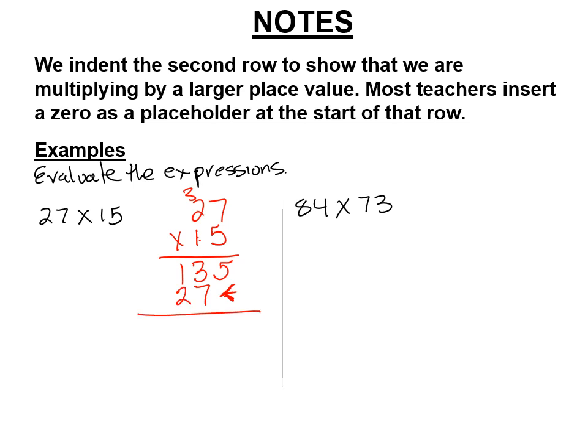And then what do you do to the two rows? You add them up. And then we go 5. 3 plus 7 is 10. We carry. And we get 4. And 27 times 15 is 405, right? Do the next one.